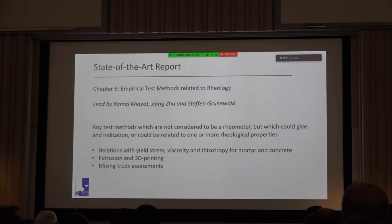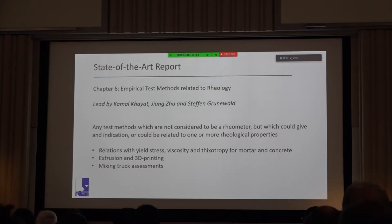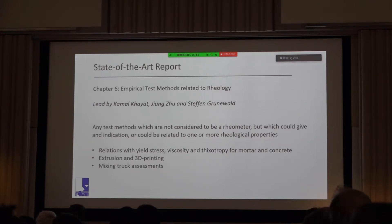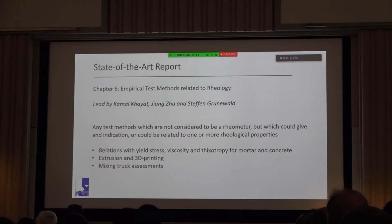Chapter 6 covers empirical test methods that can be related to rheology — tools that don't follow the formal definition of a rheometer. For example, slump: you can use a slump measurement to calculate yield stress, but measuring yield stress is not its primary function, so it moves to chapter 6. We discuss relationships of empirical test methods with yield stress, viscosity, and thixotropy for mortar and concrete. We also looked briefly at extrusion and 3D printing, and at mixing torque assessments.